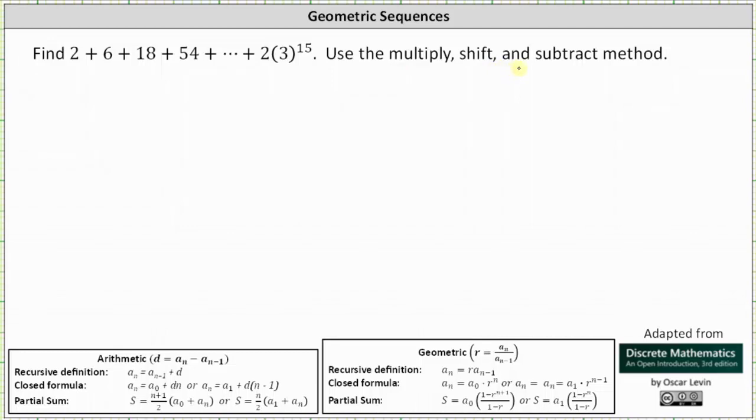We can only use this method because we have a sum of a geometric sequence. Notice 2 times 3 equals 6, 6 times 3 equals 18, 18 times 3 equals 54 and so on. This indicates we have a sum of a geometric sequence where r, the common ratio, is equal to 3.